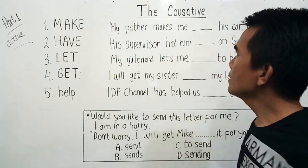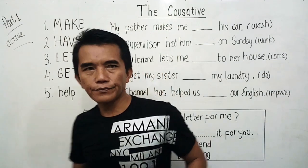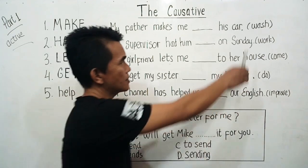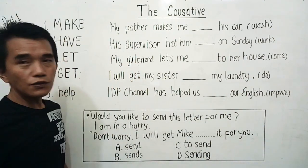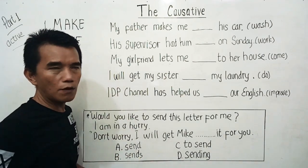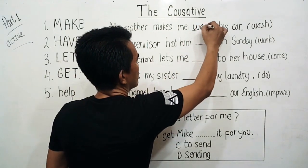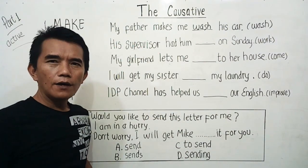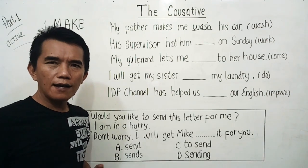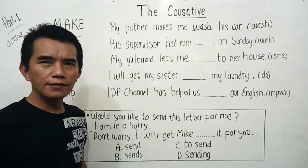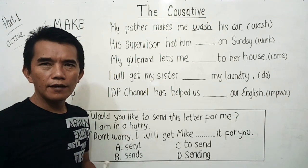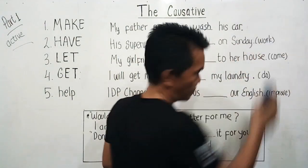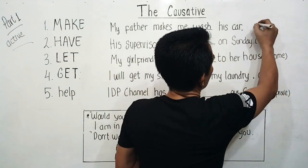Number one: 'My father makes me ___ his car.' The main verb here is 'wash,' so for causative 'make' we just use the base form of the verb. So the answer is: 'My father makes me wash his car.' What is the meaning of 'make' here? When someone makes us do something, it means they force us — we have no choice. So 'make' here means to force.